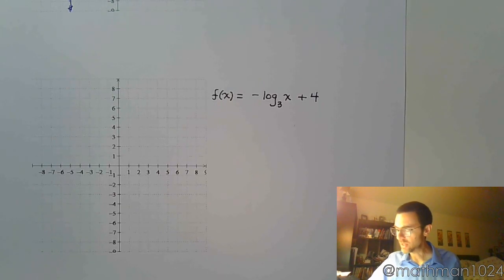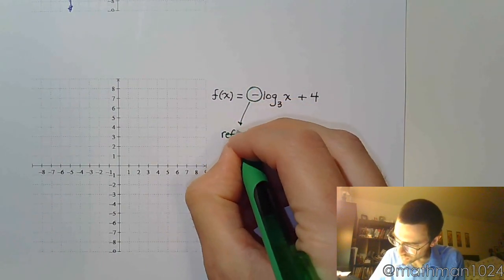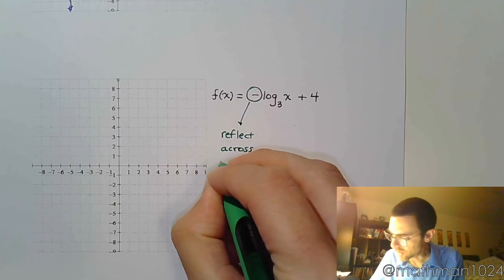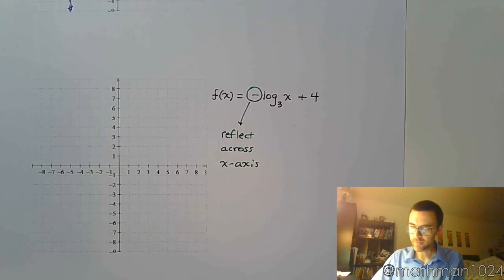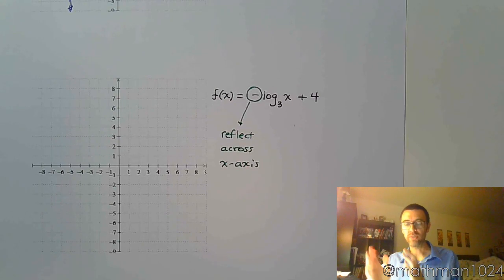Alright, so I see that I've got a couple things going on here. I've got a negative, which means, as with all cases, I reflect across the x-axis.